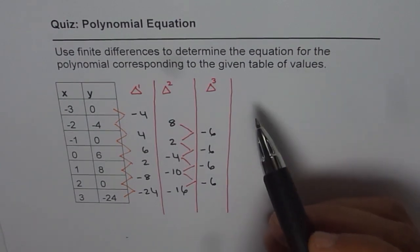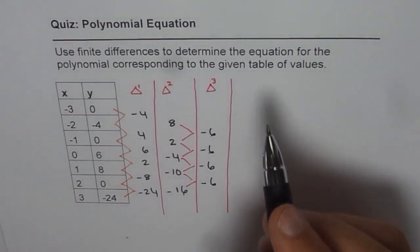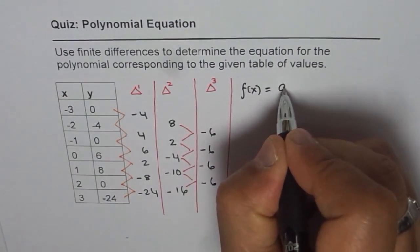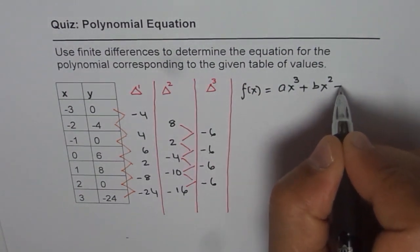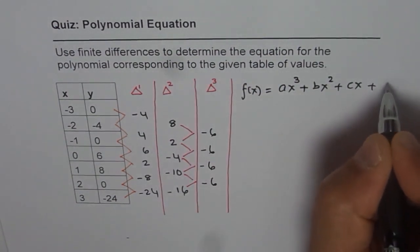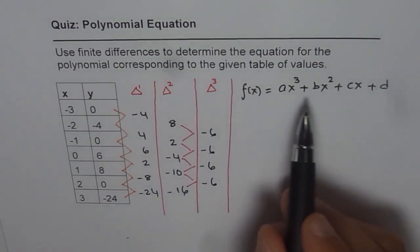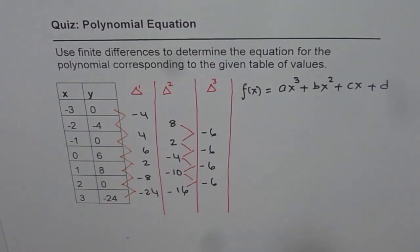Since the third finite difference is constant, we know we are expecting a cubic function. So we can write the function as f(x) = ax³ + bx² + cx + d. There are four unknowns, so we may need four points to solve this equation.